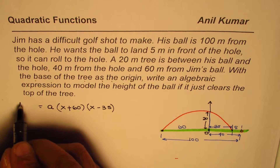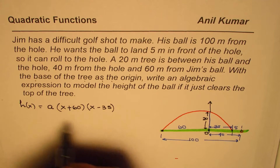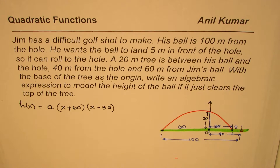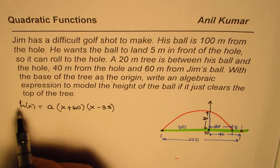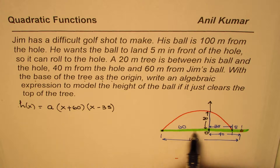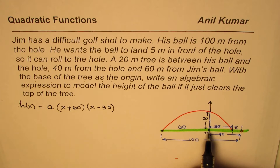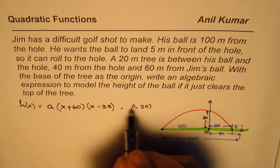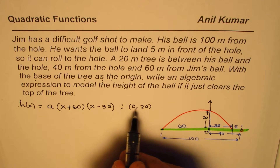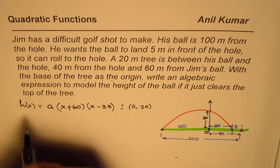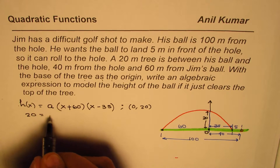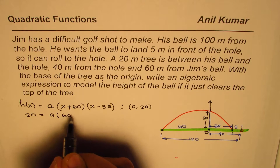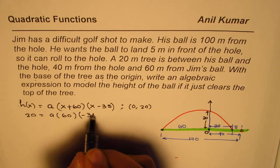Let me call this h(x), the height as a function of x, where x is the distance from the origin and h is the height with respect to x. To find the value of a, we use the point (0, 20) — the height of the tree itself. So substituting x = 0 and h = 20: 20 = a × (0 + 60) × (0 - 35).